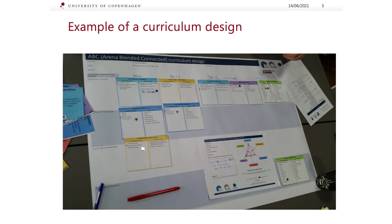Here are some examples of how a curriculum design could look like. You have the ABC design board, the different activity cards, the learning graph, as well as the tweet — which is a summary of the module that you are actually designing.